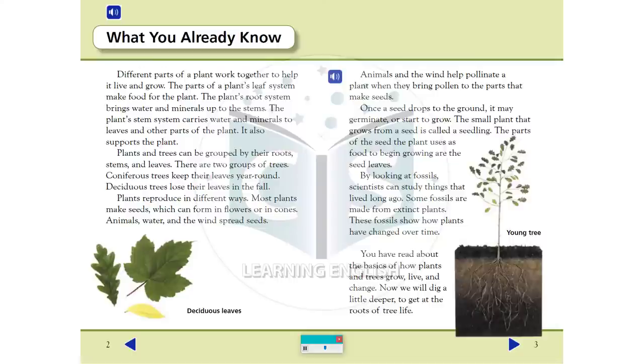Plants and trees can be grouped by their roots, stems, and leaves. There are two groups of trees. Coniferous trees keep their leaves year-round. Deciduous trees lose their leaves in the fall.